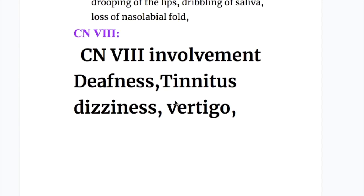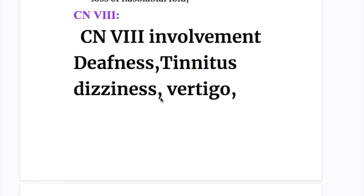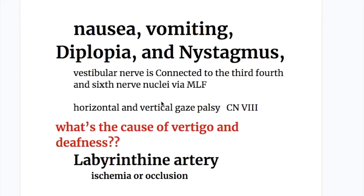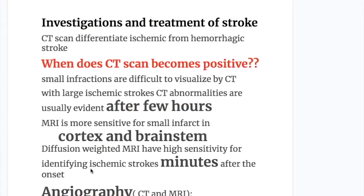Cranial nerve 8, the vestibulocochlear nerve, causes deafness, tinnitus, dizziness, vertigo, nausea, vomiting, diplopia, and nystagmus. The vestibulocochlear nerve is connected to the third, fourth, and sixth cranial nerves via the medial longitudinal fasciculus, so a lesion causes horizontal and vertical gaze palsy.